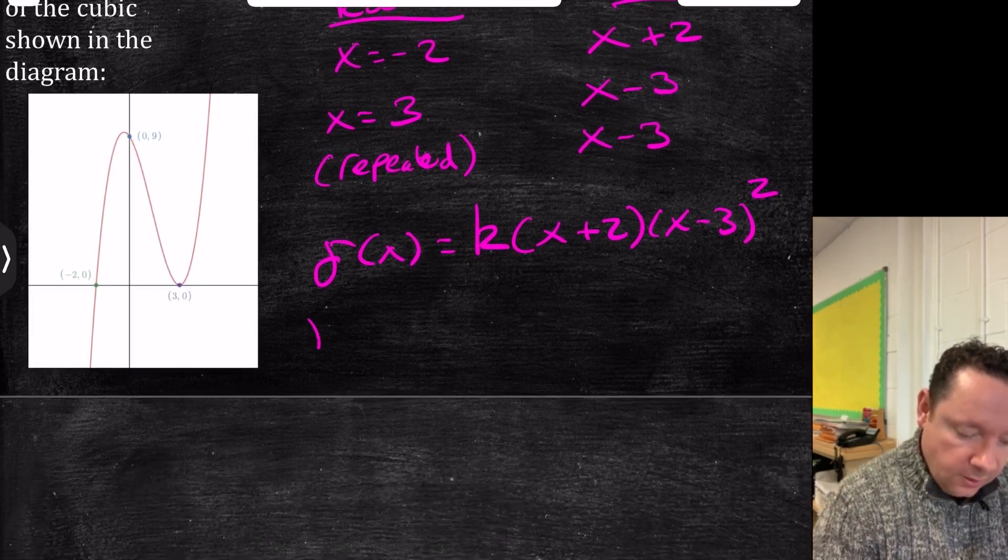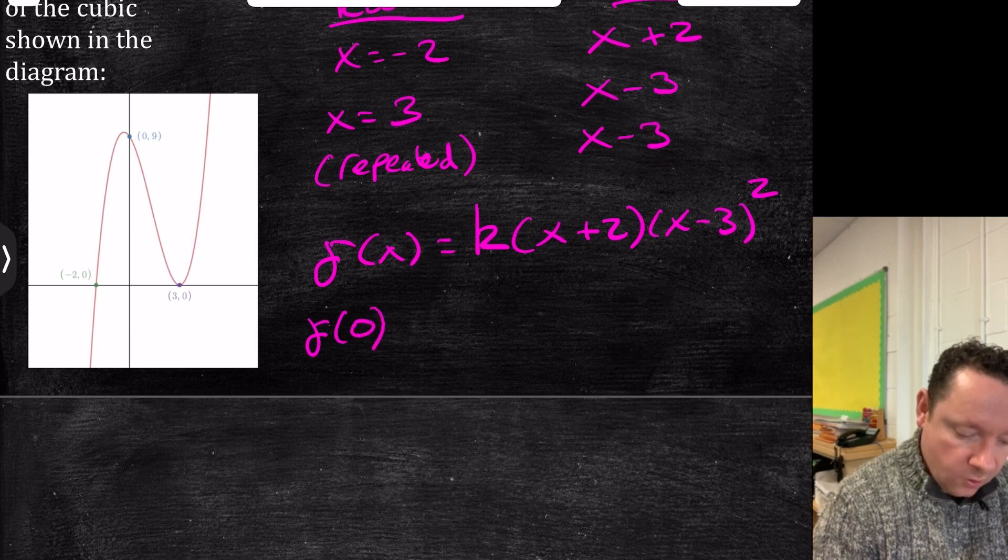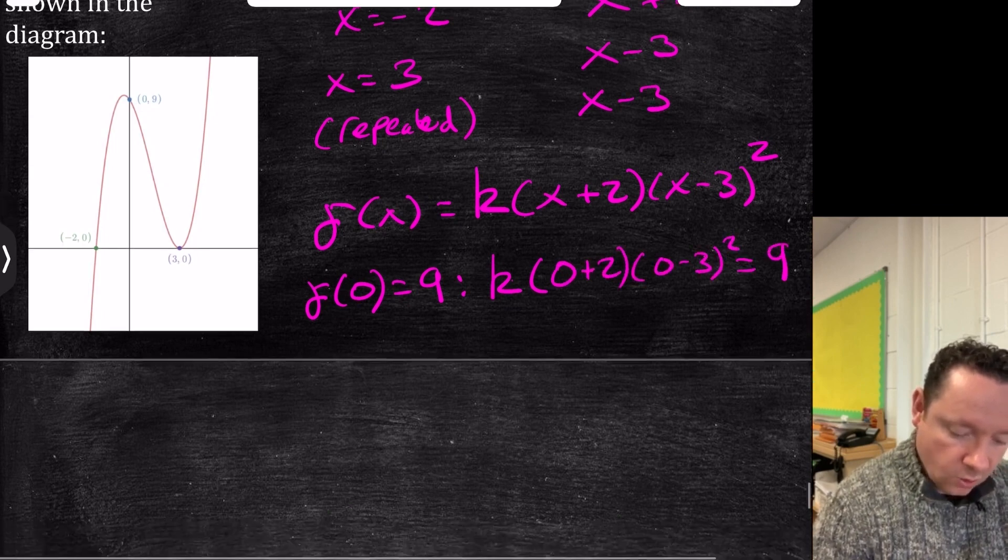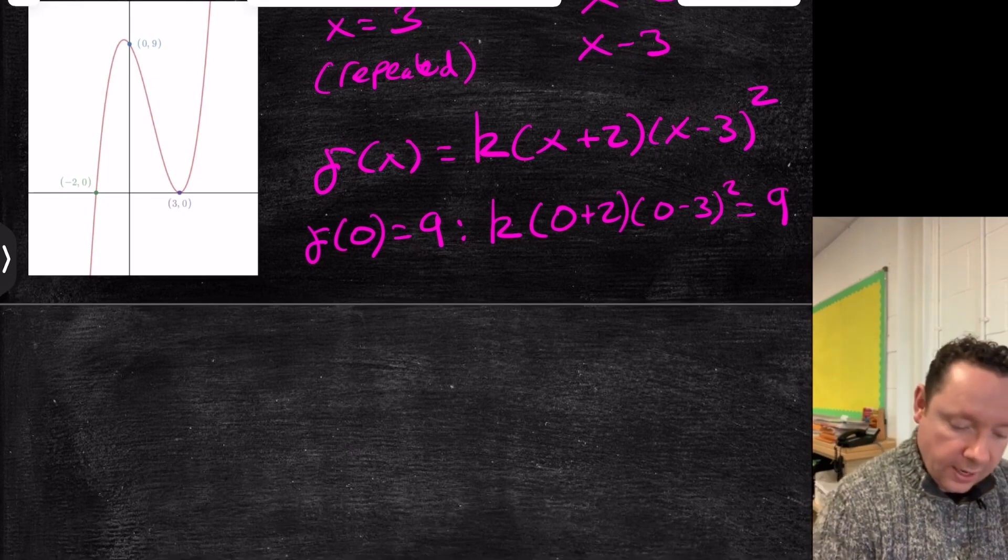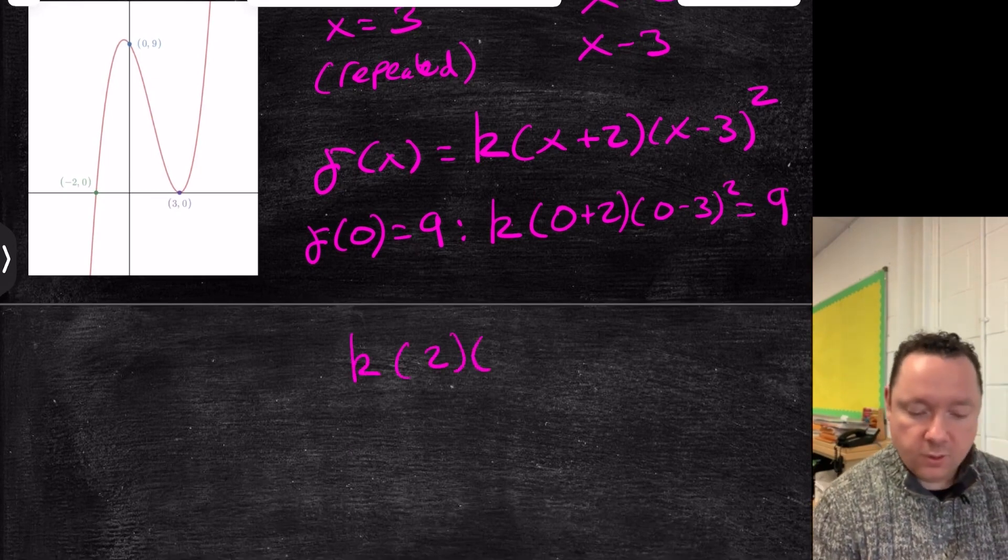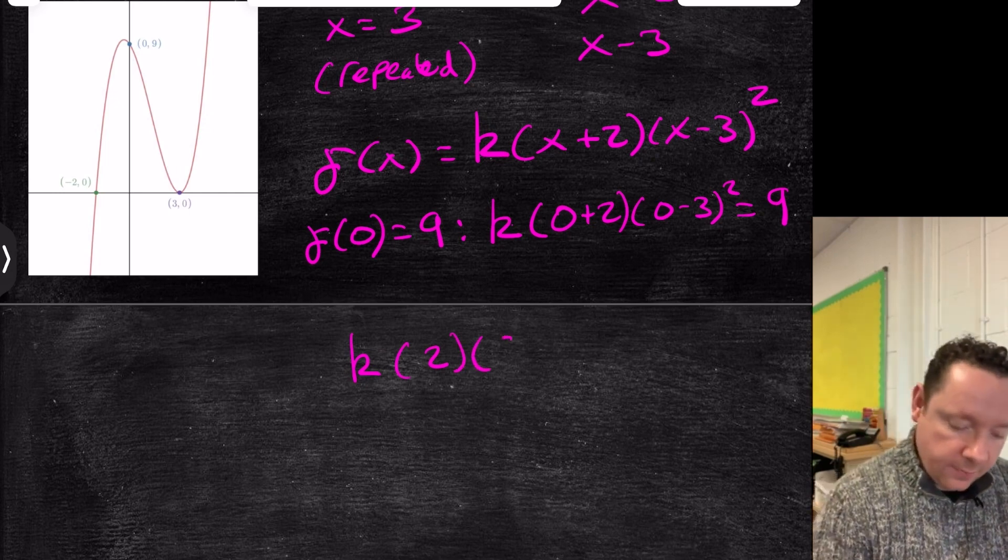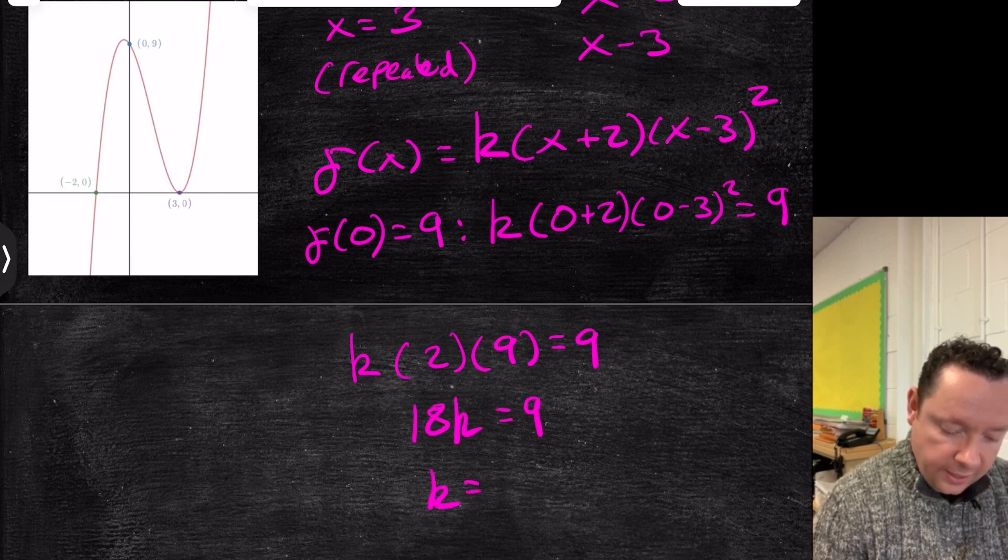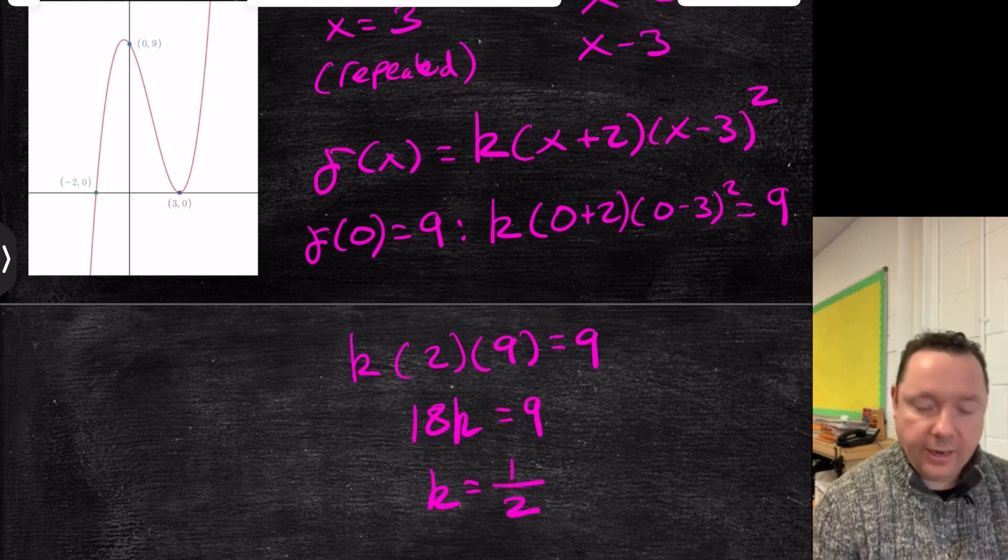So our point is 0, 9. So when x is 0, y is equal to 9. So that gives us k, 0 plus 2, 0 minus 3 squared equals 9. Solve that equation. So that is k times 2 times, well, minus 3 squared is 9. And that equals 9. So 18k equals 9. Should be obvious then that k is equal to 1 half, 9 over 18.